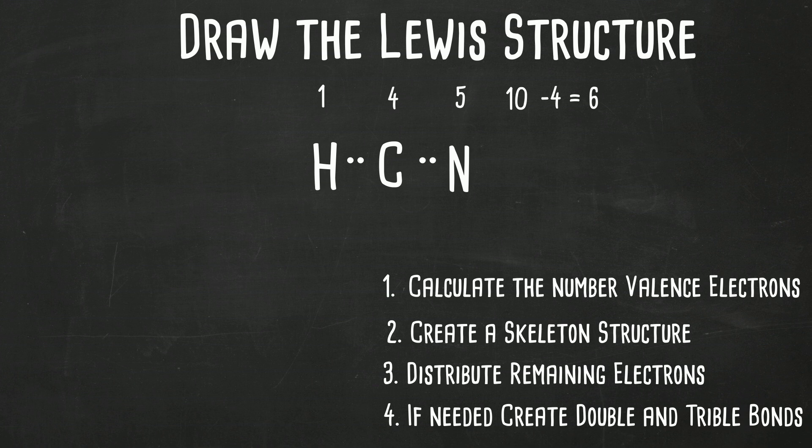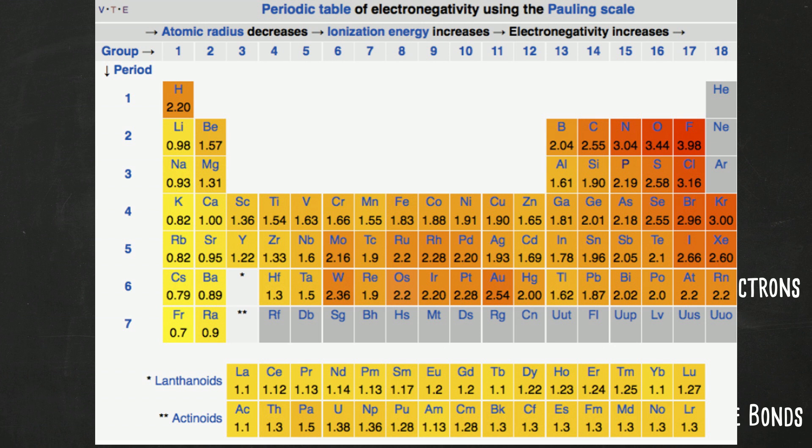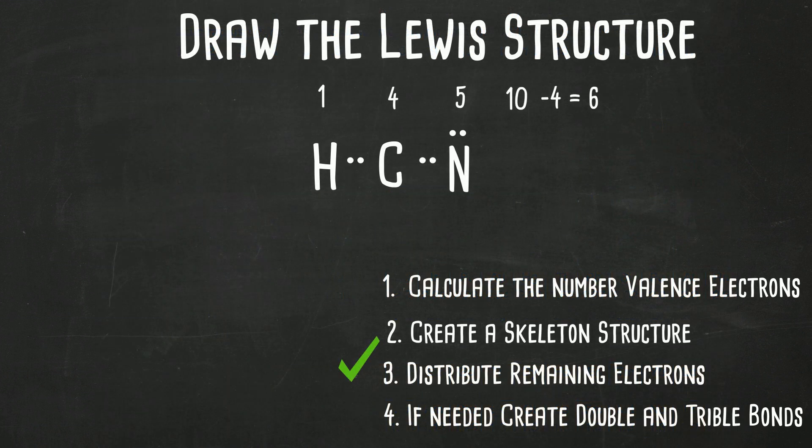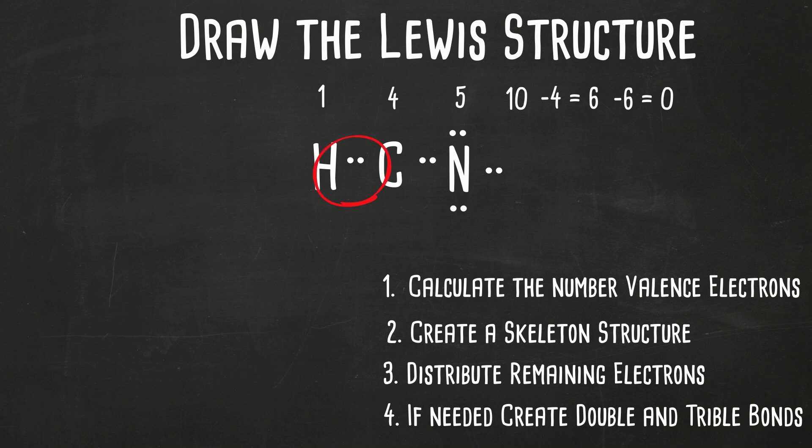So I can start with the element with the highest electronegativity which will be nitrogen. So I can put two four six around nitrogen. But if you'll notice, hydrogen is satisfied because it has two. Nitrogen has eight electrons so the octet rule is satisfied. But carbon is not.